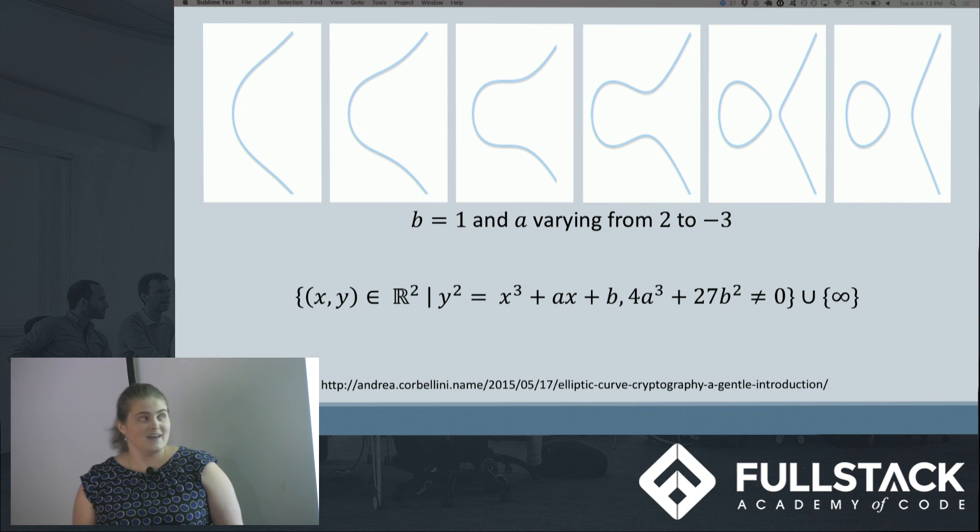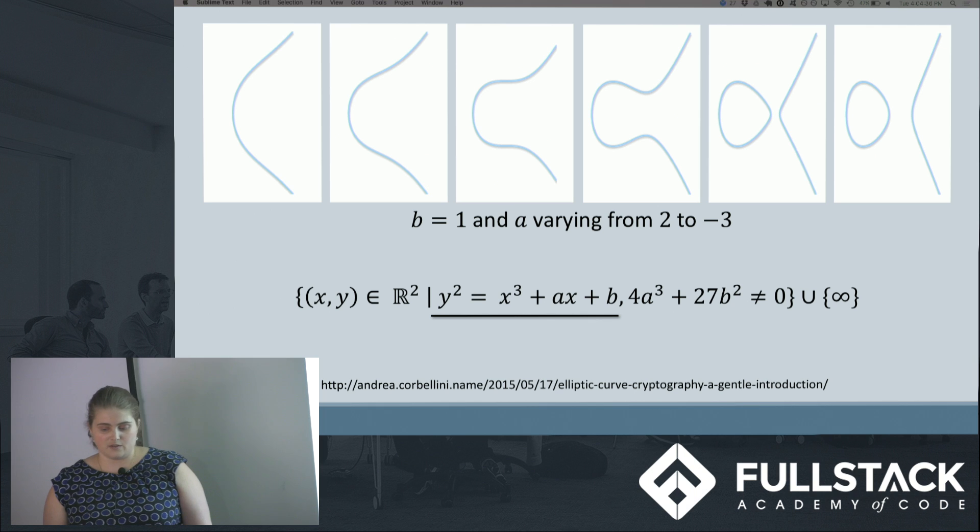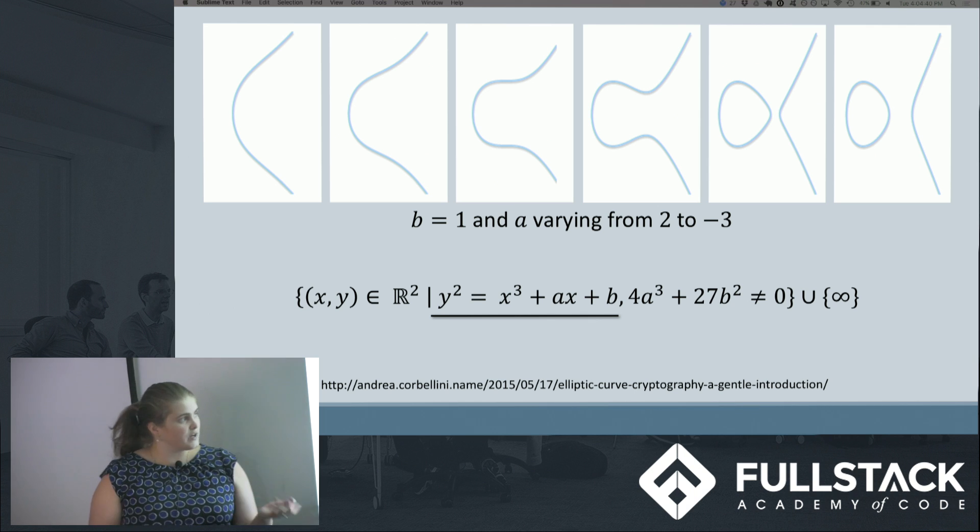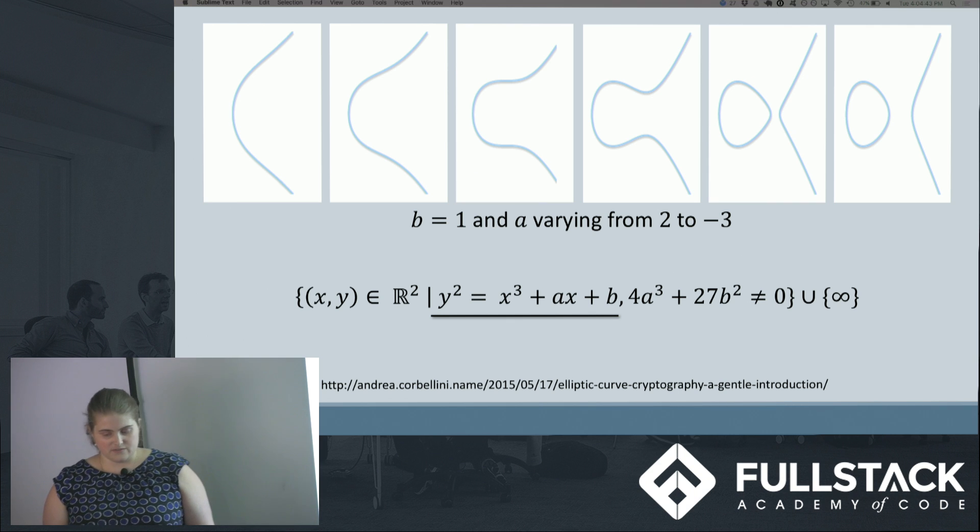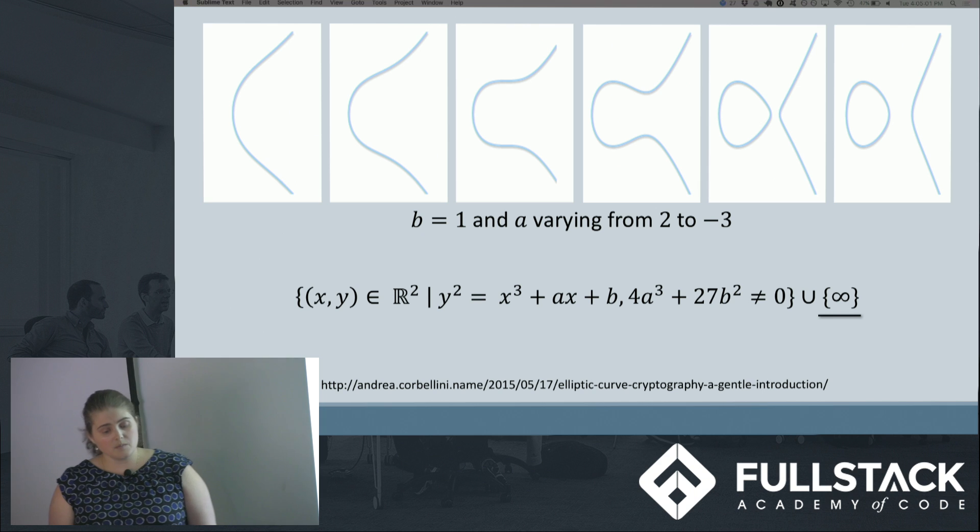What are elliptic curves? These are some elliptic curves. Notice that they are symmetrical around the x-axis. At the bottom we have the equation we use to generate these curves. This first part looks at sets of points in real numbers—essentially we're looking at a graph like in these pictures. The next part is our main equation: y² = x³ + ax + b. We have to provide two constants a and b with some basic limitations. We also add in the point at infinity, which we sometimes call zero, but this is different than the point at (0,0).